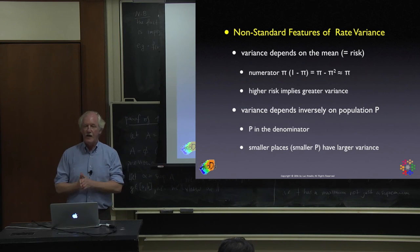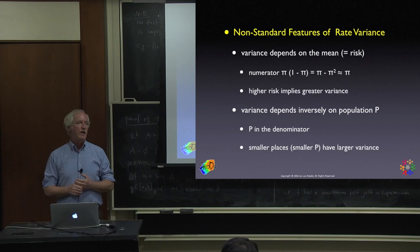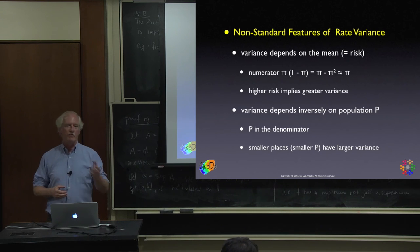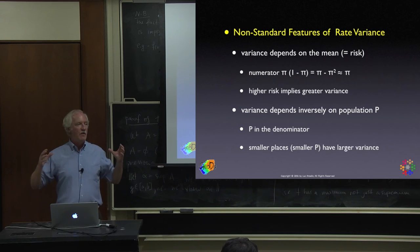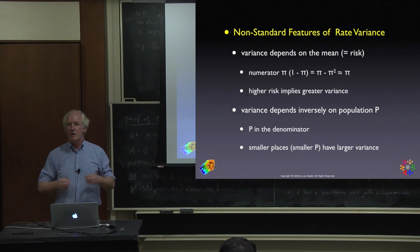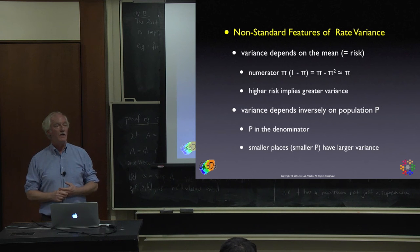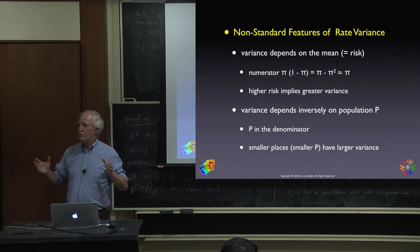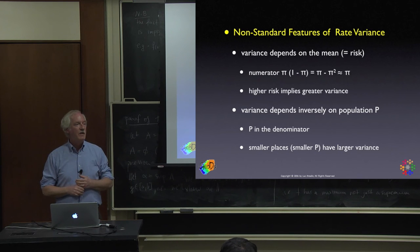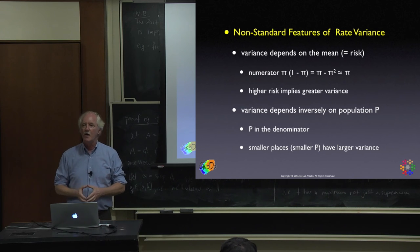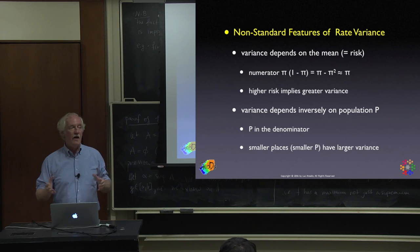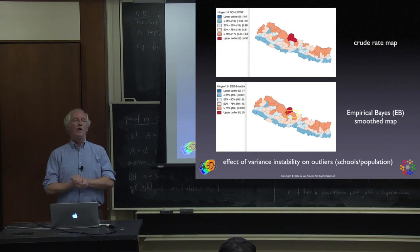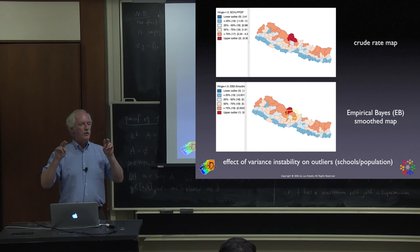Small area statisticians find the population threshold very frustrating — it cuts out many areas of interest. If we ignore the minimum threshold and want to analyze areas with very small populations, we need to deal with this. There's a whole suite of methods to smooth the rates. The idea is really Bayesian: borrowing strength from other information.